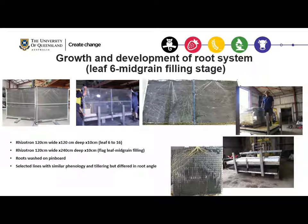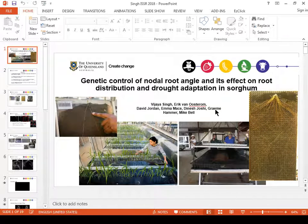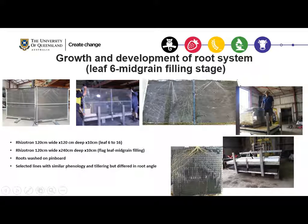We used larger rhizotrons for this purpose. These rhizotrons are 120 centimeters wide, 240 centimeters deep, and 10 centimeters thick. The roots were washed on pin boards, and one rhizotron can hold around 400 kg of soil.